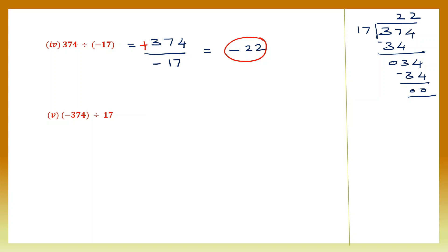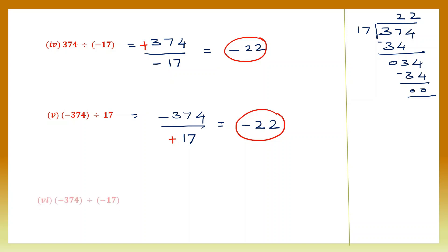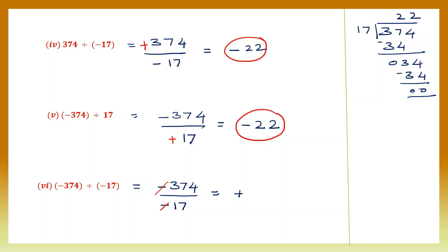Question 5: minus 374 divided by 17. This time 17 doesn't have a sign, so let's give it a plus sign — signs are different, so the answer is negative. The numbers have already been divided and we got quotient 22, so the answer is minus 22. Next: minus 374 divided by minus 17 — signs are the same, so the answer is positive. 374 divided by 17 has already been done, so the answer is plus 22.